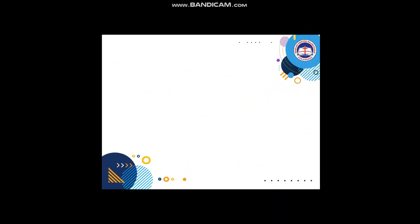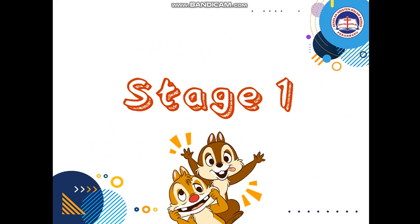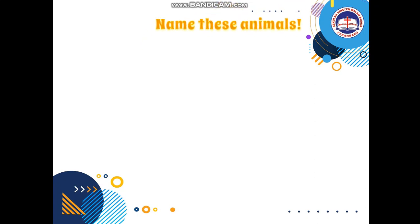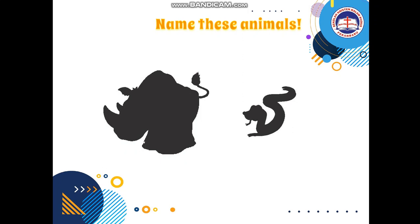It's time to play another game! Shall we start? Let's go. Stage one — are you ready? Name these animals. Can you tell me what these animals are? Do you know what this is? Yes, a rhino! And what about this one? A snake. Yes, very good. Can you repeat after me? A rhino and a snake.